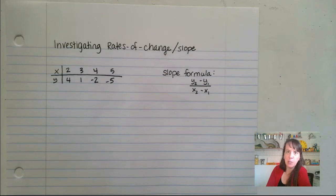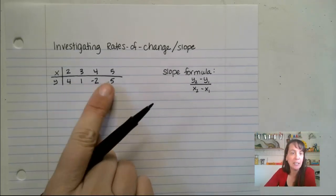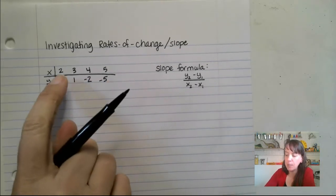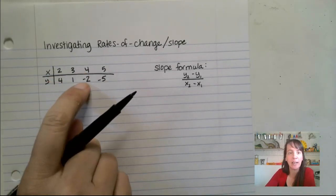For me, I'm a visual learner. I think it's a little bit easier to see these stacked on top. So what you can do is pick any two points on this line. We can pick (2, 4), (3, 1), (4, -2), or (5, -5).